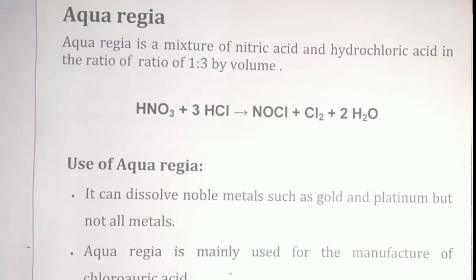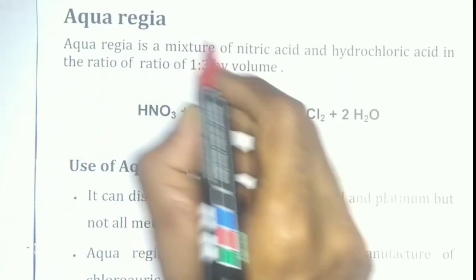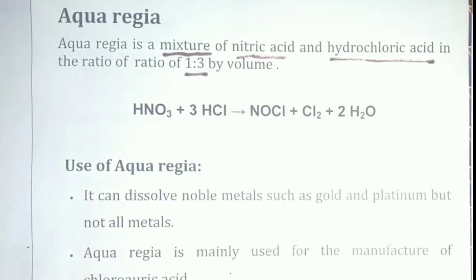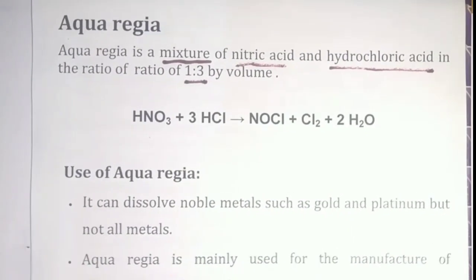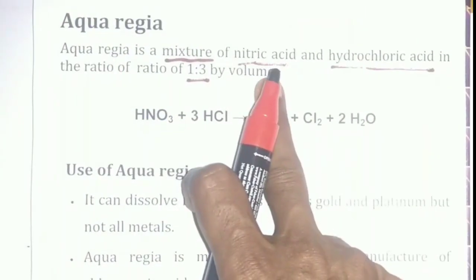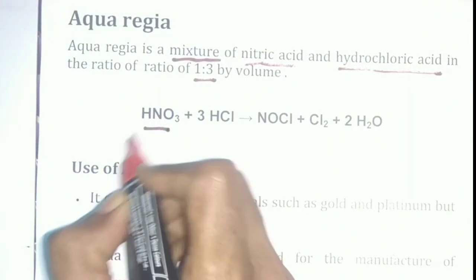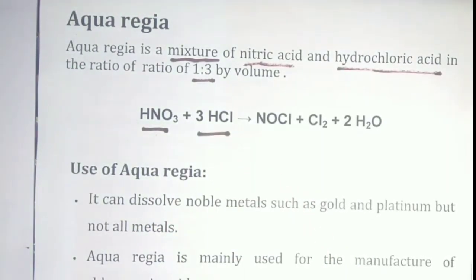The question is about Aqua Regia. In our question paper, we will discuss Aqua Regia. Aqua Regia is a mixture of nitric acid and hydrochloric acid in the ratio of 1 to 3 by volume. It is a mixture of 3 volumes of hydrochloric acid and 1 volume of nitric acid.